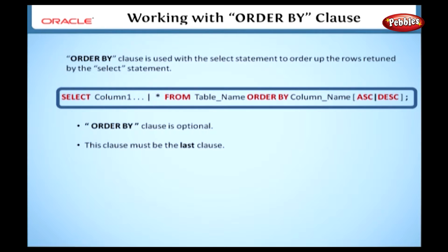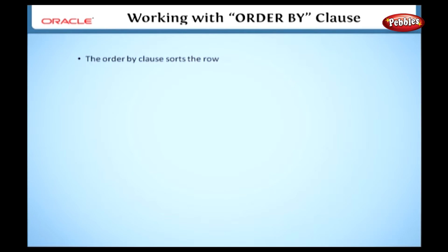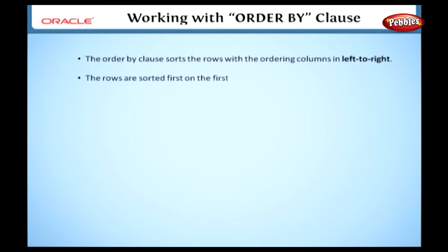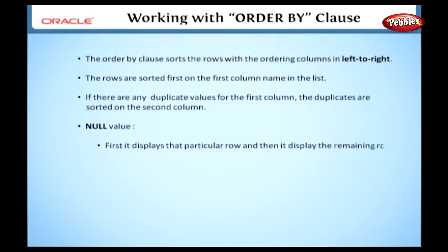In a SELECT statement, the result rows have no defined order. The ORDER BY clause is used to define the ordering of rows based on columns from the SELECT statement. It sorts the rows within the ordering columns from left to right — rows are sorted first on the first column name in the list. If there are any duplicate values for the first column, the duplicates are sorted on the second column. If it encounters a null value, it displays that particular row first and then displays the remaining rows.